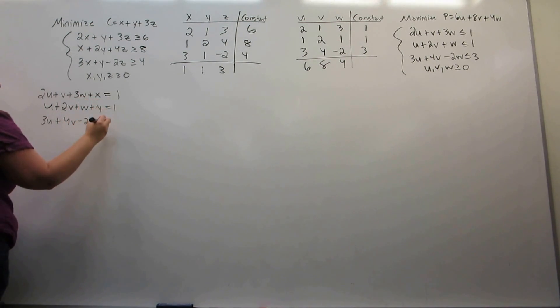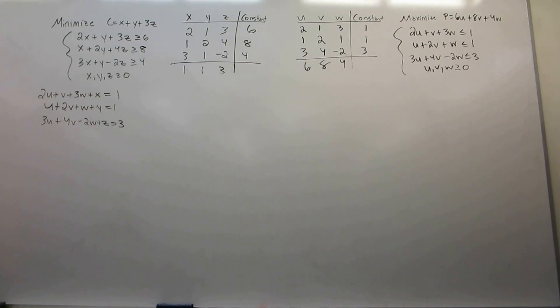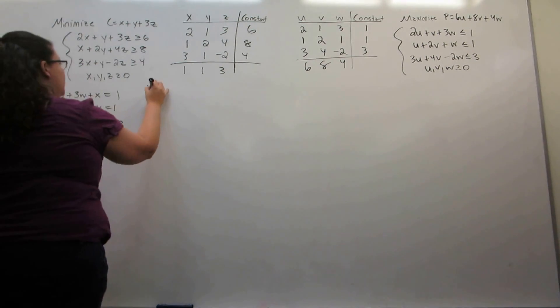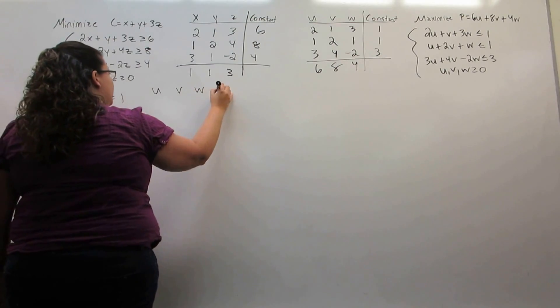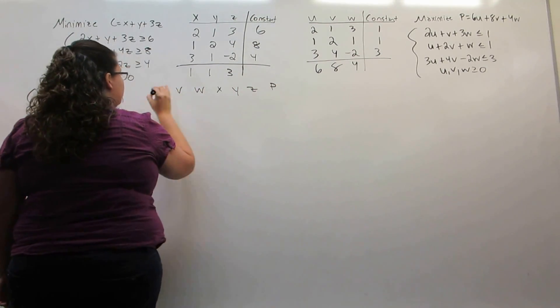That should have been y. This one will be z. We also need to rewrite our objective function. As always, we want everything on one side, and we want a positive p. Now, we set up our initial simplex tableau: u, v, w, x, y, z, and p.